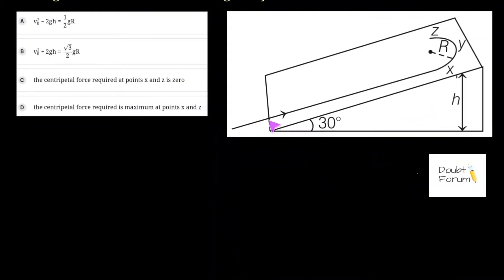This is the given figure. At the beginning of the ramp, the velocity of the student is V0. At the end of this ramp there is a semi-circular path XYZ, and point Y is the highest point of this path with height H from the ground. As the student moves, the height continuously increases — starting at 0 at the bottom and reaching H at point Y. So there is a change in height.